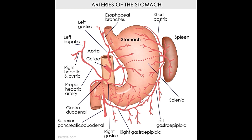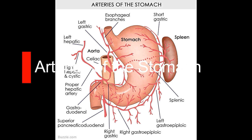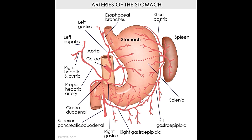The stomach gets its supply of oxygenated blood from the branches of the celiac artery. These branches include the left gastric artery, right gastric artery, short gastric arteries, left gastroepiploic artery, and right gastroepiploic artery. The left gastric artery is the narrowest branch of the celiac. It passes upward and runs to the left to reach the esophagus, then runs down along the lesser curvature of the stomach, providing blood to the upper right section of the stomach and the lower section of the esophagus.